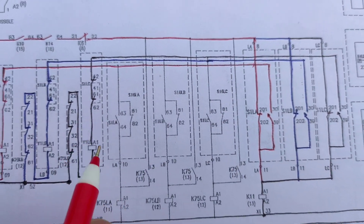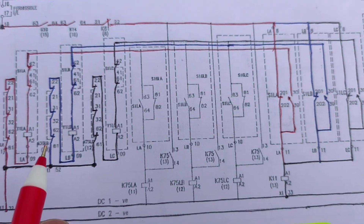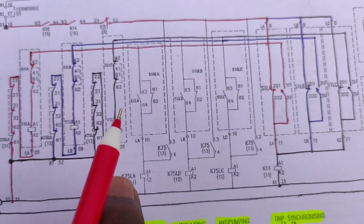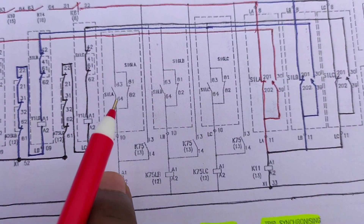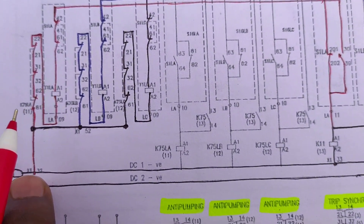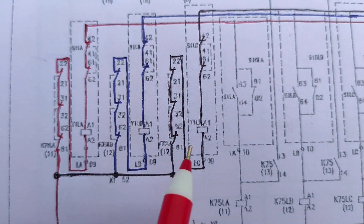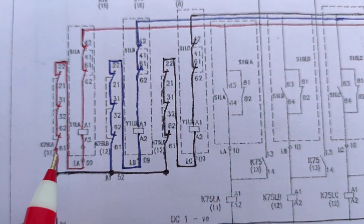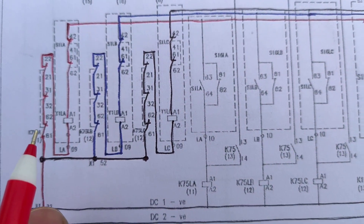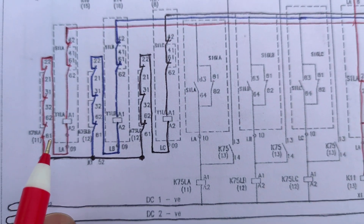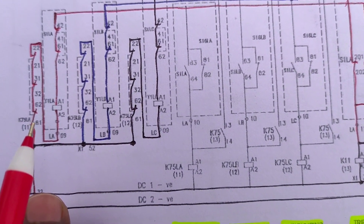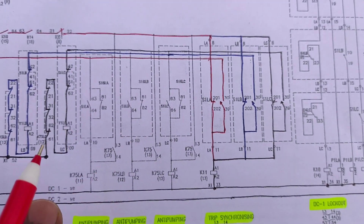Blue is for the yellow phase and black is drawn for the blue phase — for your understanding, these operations will be the same. After these operations and after the breaker is on, the auxiliary switches position will be changed to NC. Then this circuit fiber LA, LB, LC will be NO, so you cannot close the breaker again. The anti-pumping relay is used for this purpose — so that you cannot mal-operate the breaker again and again. This is the closing operation.